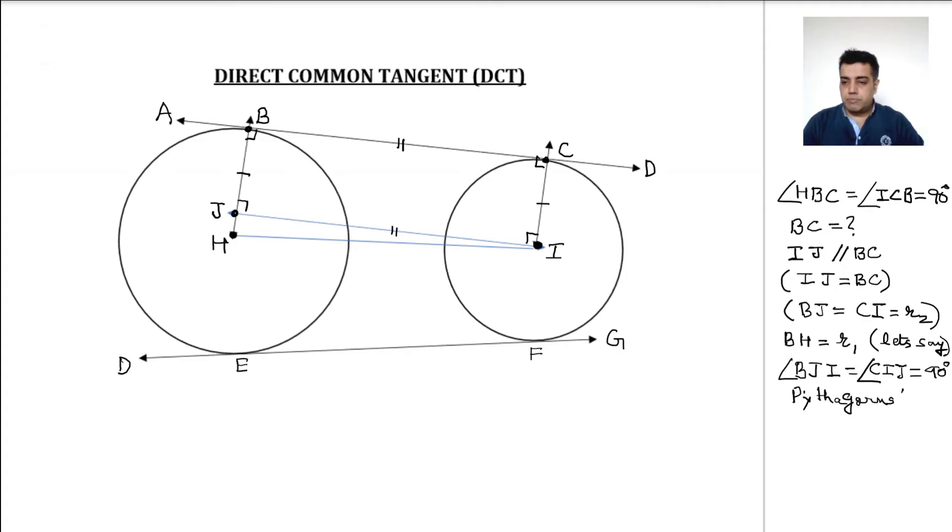Okay, so if I use Pythagoras theorem, we are using the Pythagoras theorem in the triangle IJH. So can we say that IH whole square, which is the hypotenuse whole square, is equal to IJ whole square plus JH whole square. In order to understand this better, maybe you can put this inside a parenthesis so that it becomes easier for you to understand. Once we do this, from here, what are we supposed to calculate? We are supposed to calculate the length of the direct common tangent, which is IJ.